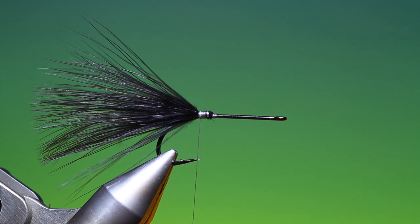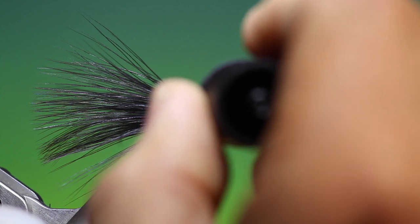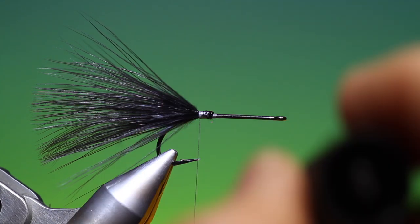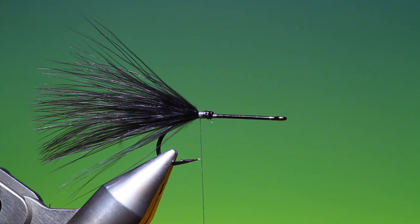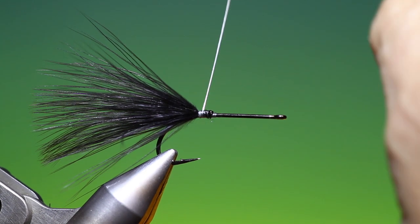And then I'll put a tiny drop of superglue on that because I don't want that moving when I pack the deer hair. I don't want it pushing backwards and that'll keep everything in place. So now we can go forward.